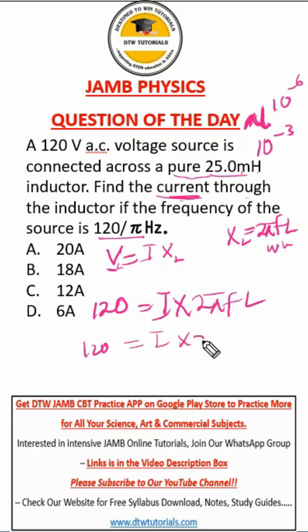Times our XL, which is 2πfL. So here we have 120 equals I times 2 times π. Our f is what? Our f is 120 over π.